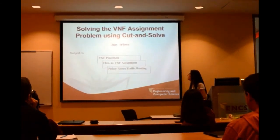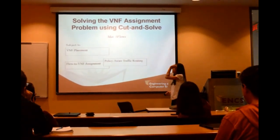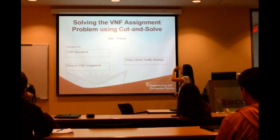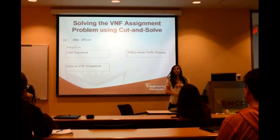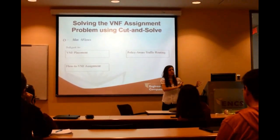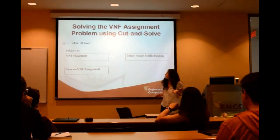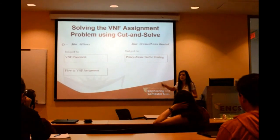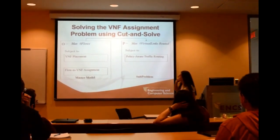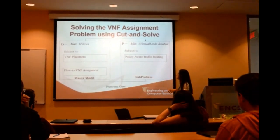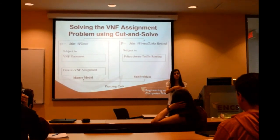We decompose the problem into two sub-problems: the master takes care of the VNF placement and the flow-to-VNF assignment, while the pricing sub-problem takes care of traffic routing. At every iteration, the master tries to solve the VNF placement and flow assignment without regard to whether we'll be able to route the traffic — this guarantees an upper bound. The pricing sub-problem tries to do the traffic routing and maximize the amount of traffic it can route. The master sends its solution to the sub-problem, which sends cuts back to the master, and we iterate until both converge to the same solution — meaning we reach optimality.